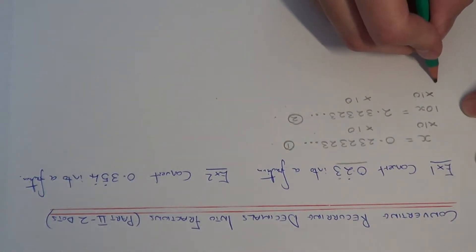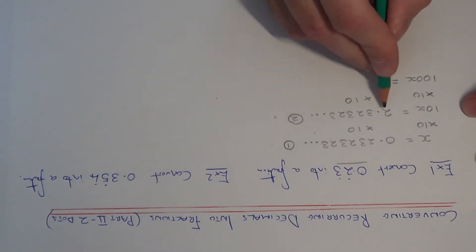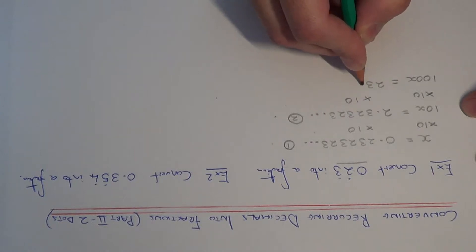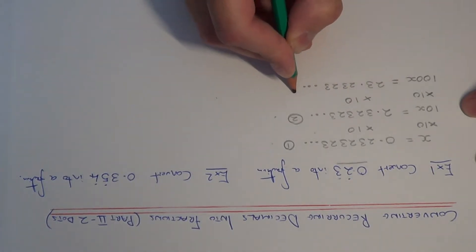So 10x times 10 is 100x, and if I multiply this by 10, all the numbers move over the decimal point, I get 23.2323 etc.